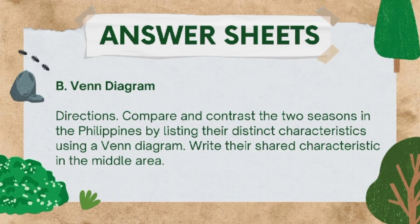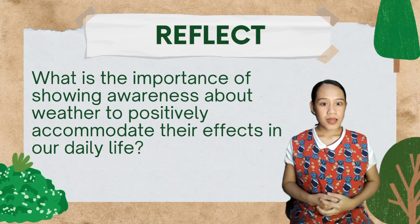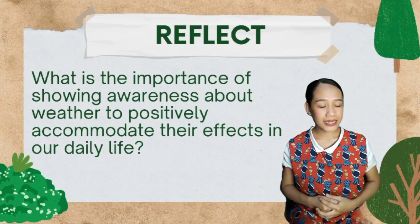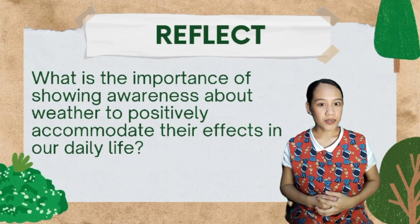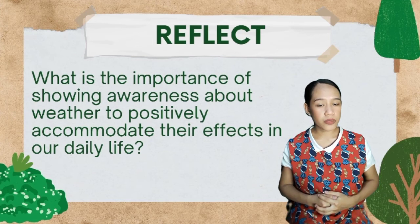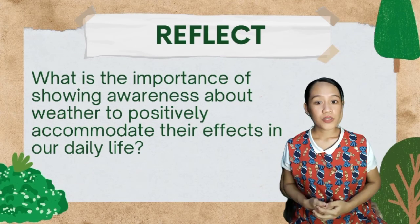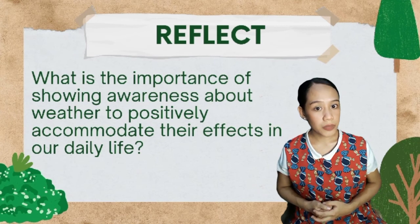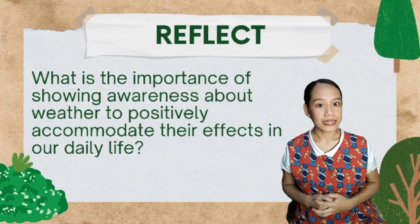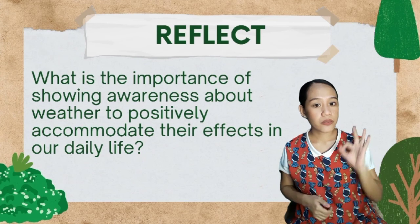For the second part, compare and contrast the two seasons in the Philippines by listing their distinct characteristics using a Venn diagram. Write their shared characteristics in the middle area. Also, reflect on this question by writing a three-paragraph essay: 'What is the importance of showing awareness about weather to positively accommodate their effects on our daily life?' You are also to create a weather pattern table with your accompanied activities on a certain day.